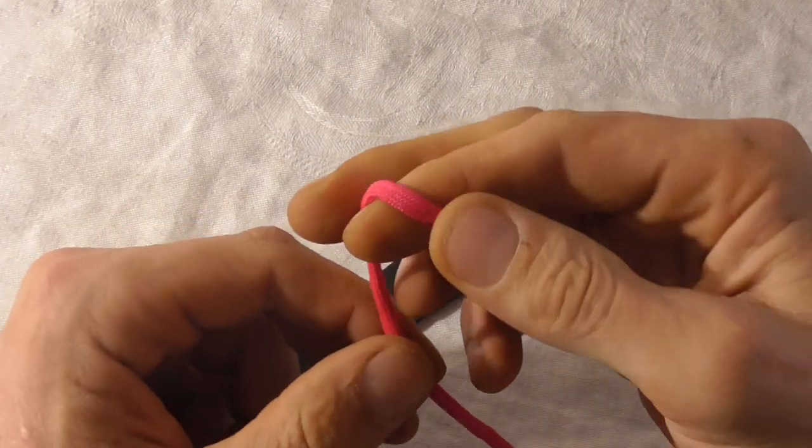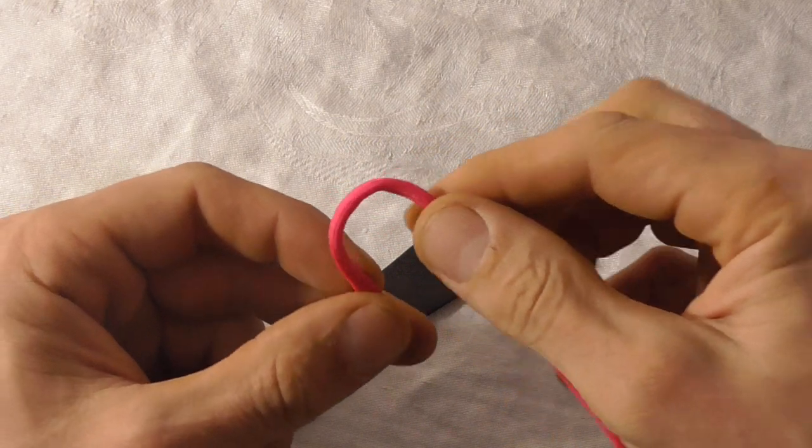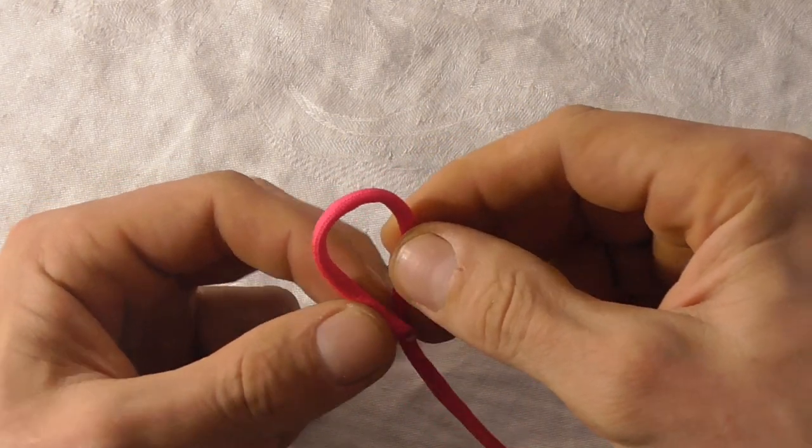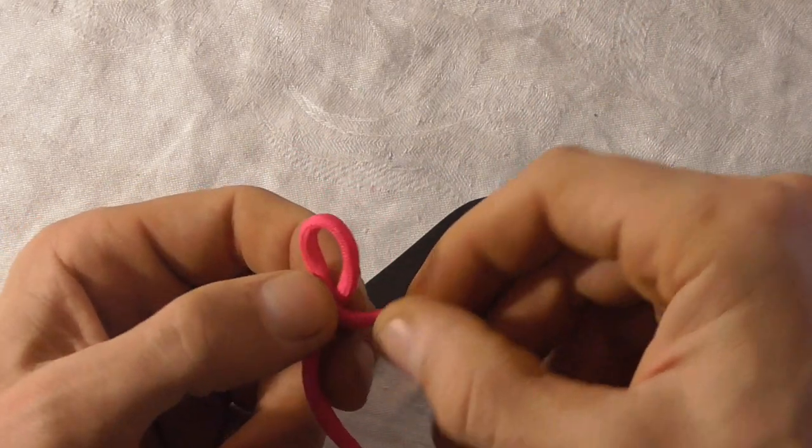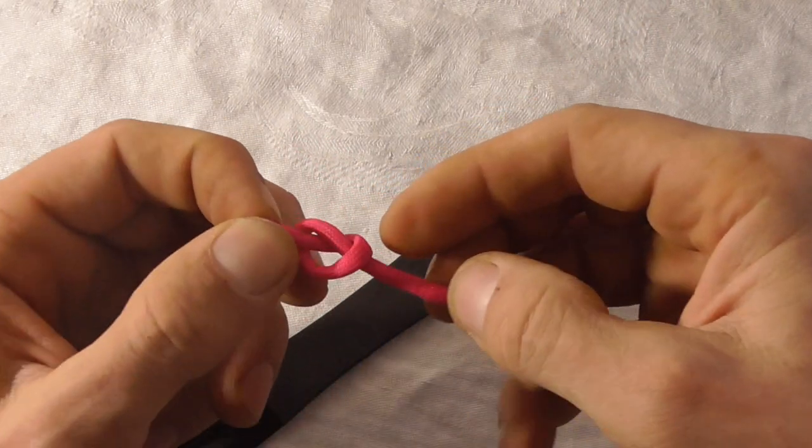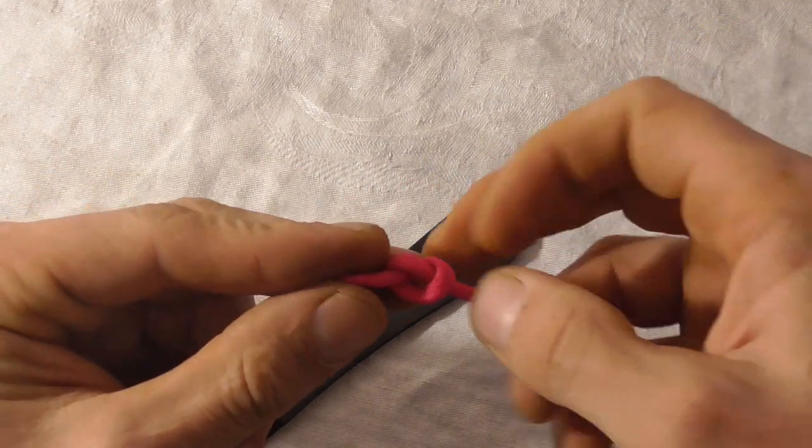To tie this knot, all we want to do is first make a stopper knot. I'll use a simple overhand knot just by making a loop and then tucking my working end through the loop. Just a simple overhand knot.